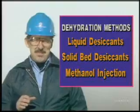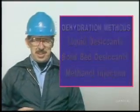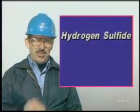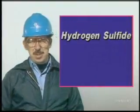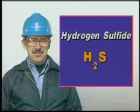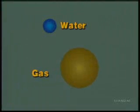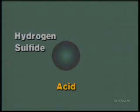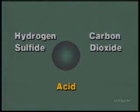Now let's move on to the second major contaminant on the list: hydrogen sulfide, also known by its chemical symbol H2S. Hydrogen sulfide is an acid gas — a gas that forms an acid when combined with water. Two examples of acid gases are hydrogen sulfide and carbon dioxide.